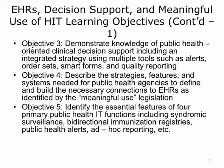Other learning objectives covered later in this unit include: 3. Demonstrate knowledge of public health-oriented clinical decision support, including an integrated strategy using multiple tools such as alerts, order sets, smart forms, and quality reporting. 4. Describe the strategies, features, and systems needed for public health agencies to define and build the necessary connections to EHRs as identified by the Meaningful Use legislation. And 5. Identify the essential features of four primary public health IT functions, including syndromic surveillance, bi-directional immunization registries, public health alerts, and ad hoc reporting.